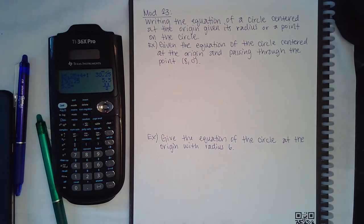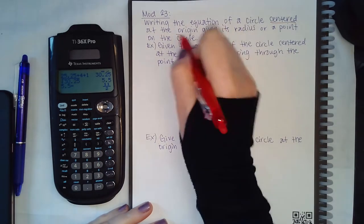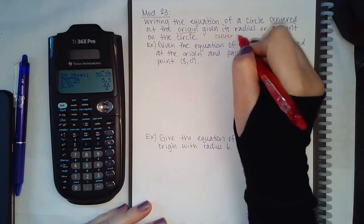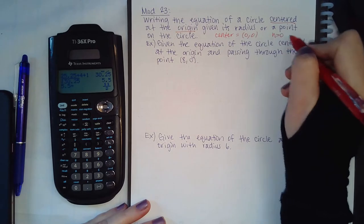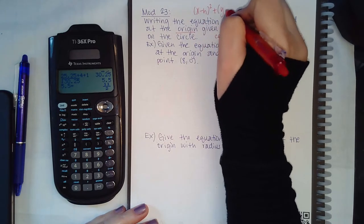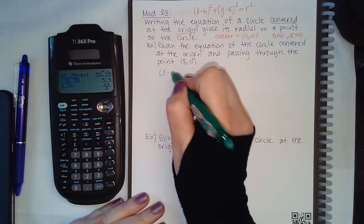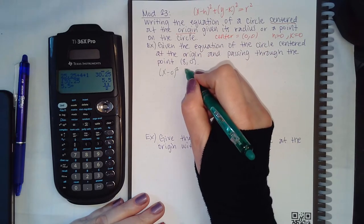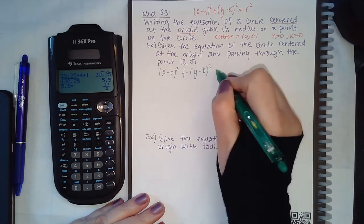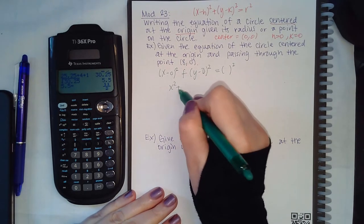This is module 23, continuing with circles. We need to write the equation of a circle centered at the origin. Since it's centered at the origin, the center is (0, 0), so h = 0 and k = 0. The standard form is (x - h)² + (y - k)² = r². Since h and k are both 0, I just need to figure out what the radius is.